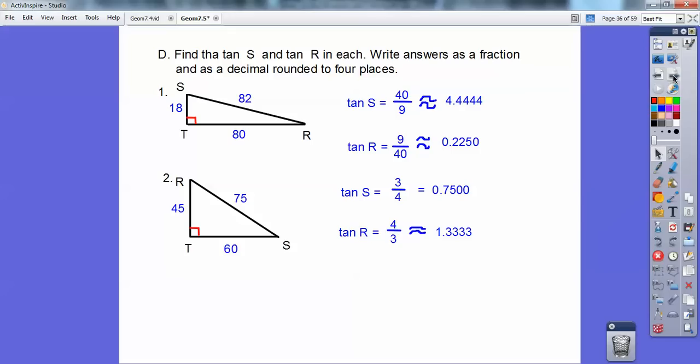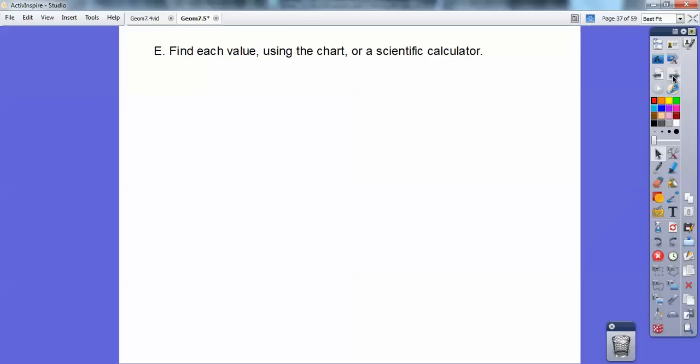The tangent of R would be opposite. So it would be 60 over 45. And 60 and 45 reduce to 4 thirds. And you get 1.3333.